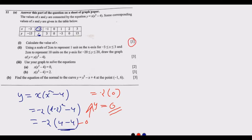Now for part two: using a scale of 2 centimetres to represent 1 unit on the x-axis, for x greater than or equal to -3 but less than or equal to 3, and 2 centimetres to represent 10 units on the y-axis, for y greater than or equal to -20 but less than or equal to 20, draw the graph of this curve — the one we have in the table.